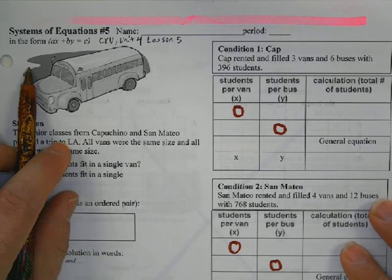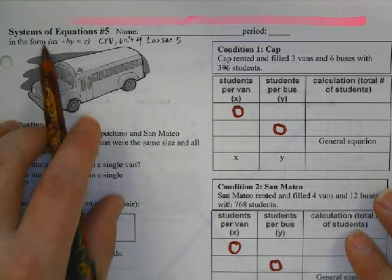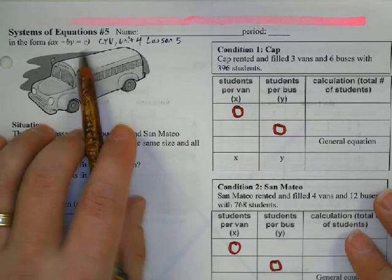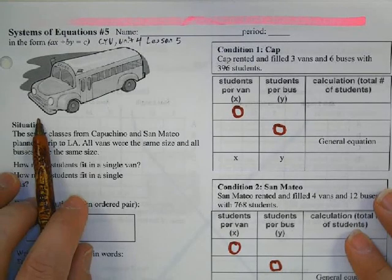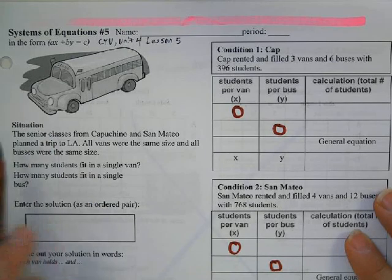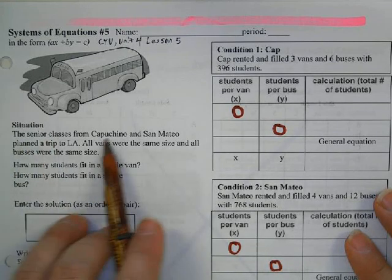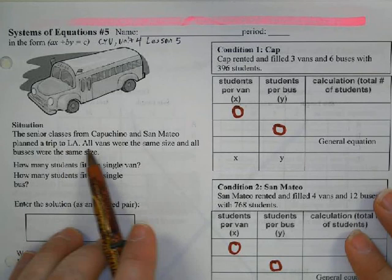Okay, here's the lesson that we did today, systems of equations number five. We did this on a Desmos activity. We've got a situation: senior classes from Capuchino and San Mateo plan a trip to Los Angeles.